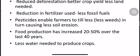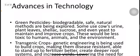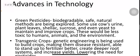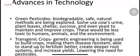Food production has increased 20 to 50 percent over the last 40 years, and less water is needed to produce crops. Advances in technology include green pesticides — biodegradable, safe, natural methods being explored. Some natural sources being investigated include cow urine and plant leaves.